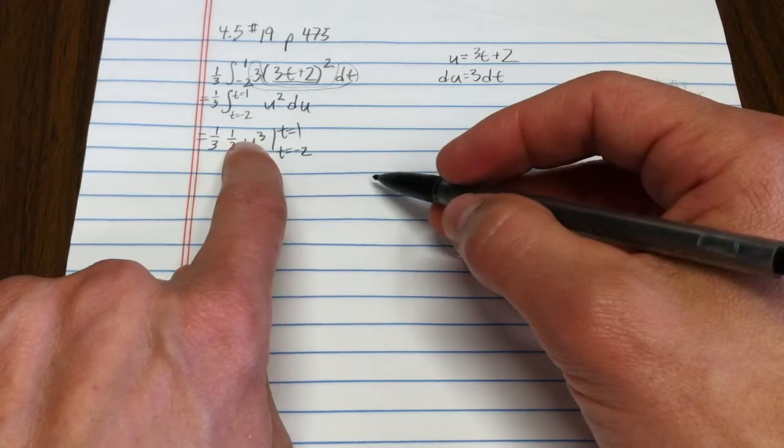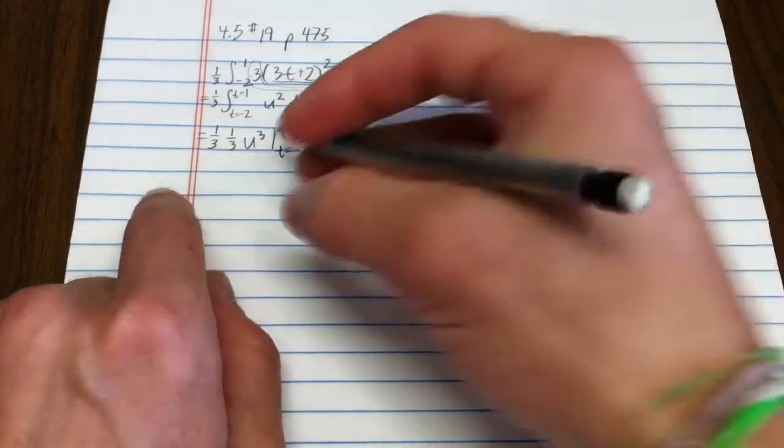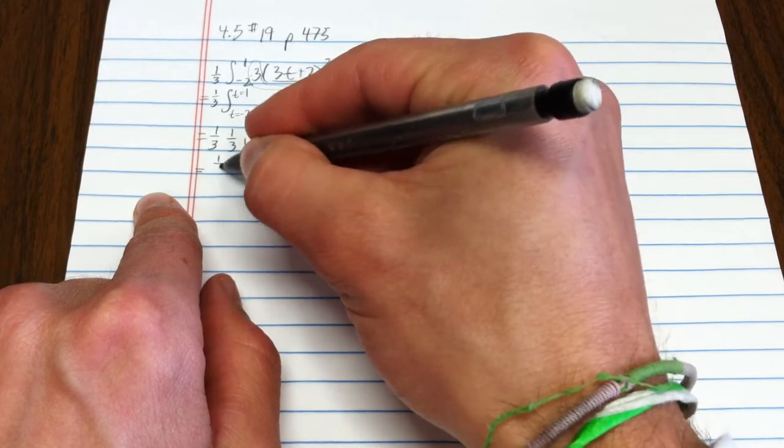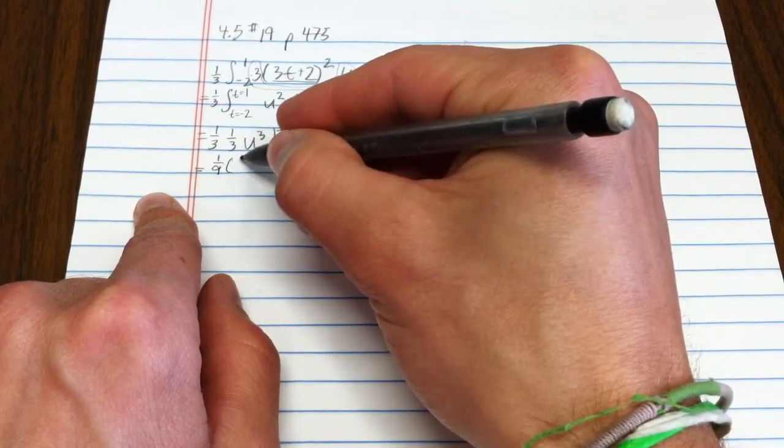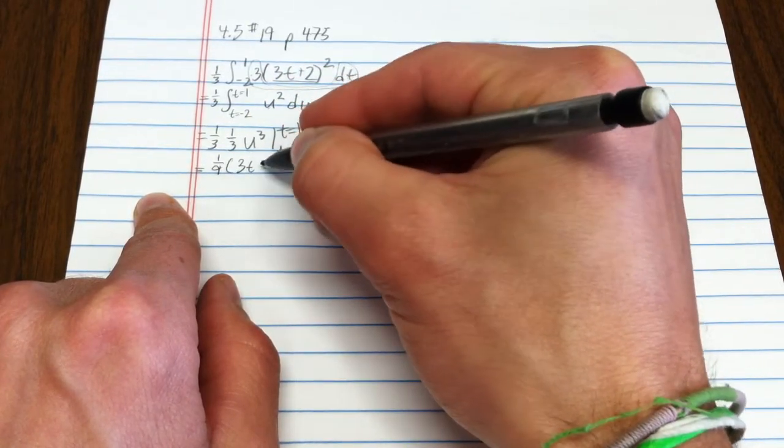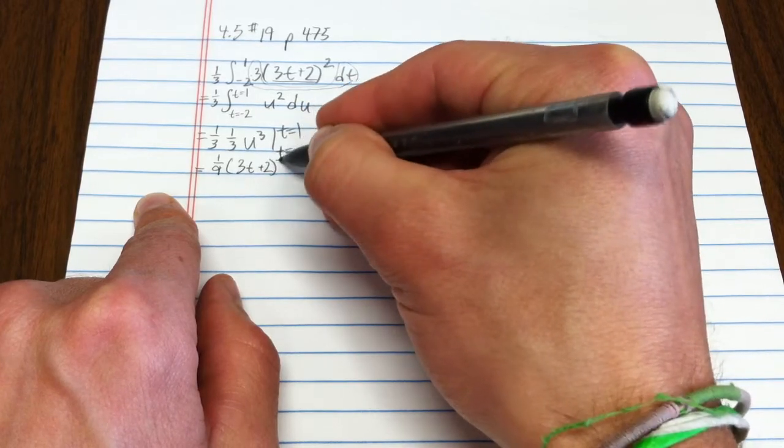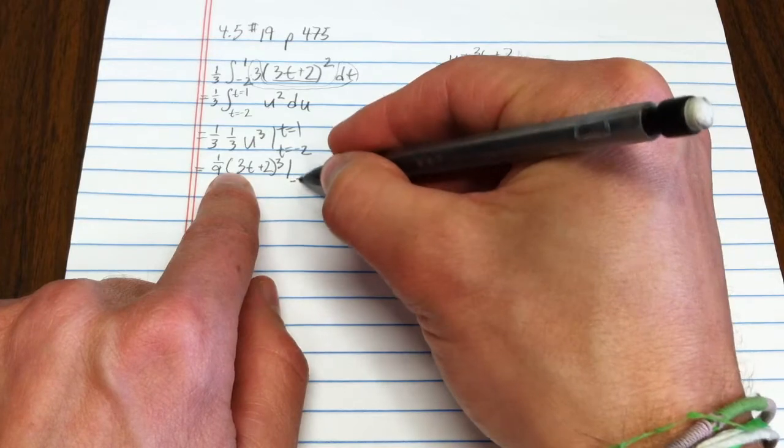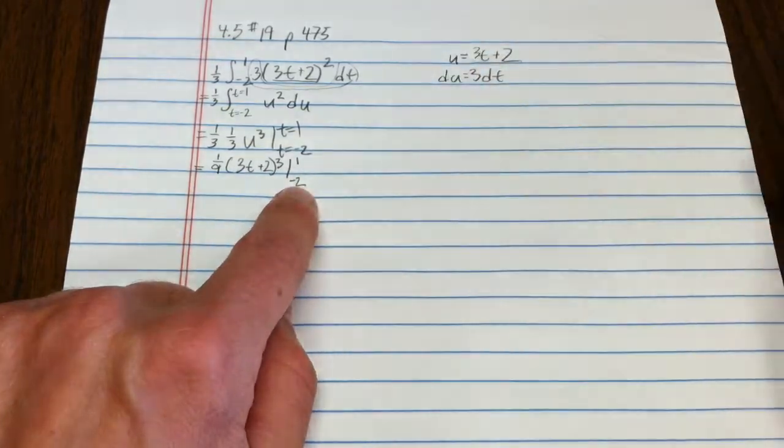I need this in terms of t. Well, luckily, I know what u is in terms of t. So, I've got 1 ninth 3t plus 2 cubed, and I'm now evaluating, since this is in terms of t, there'll be no ambiguity if I write these t values there.